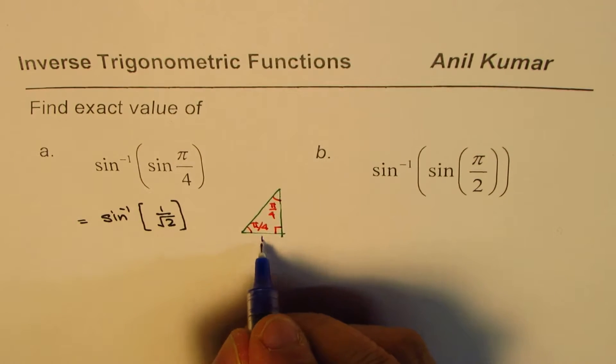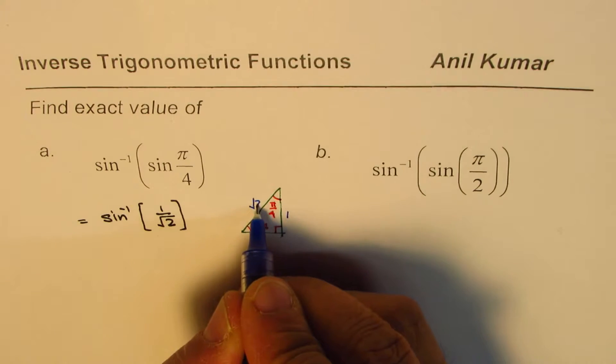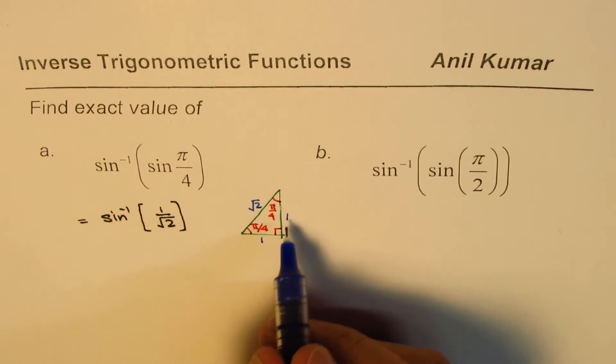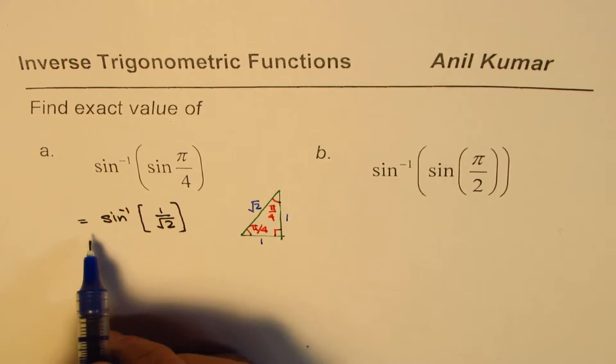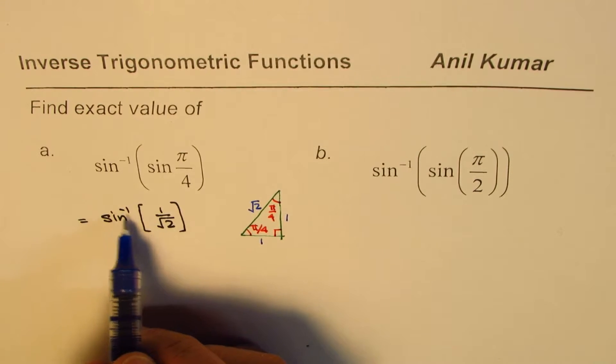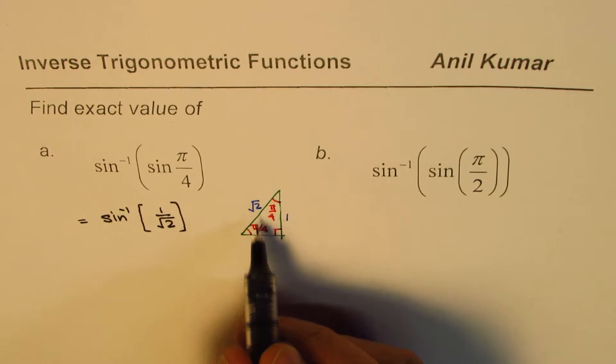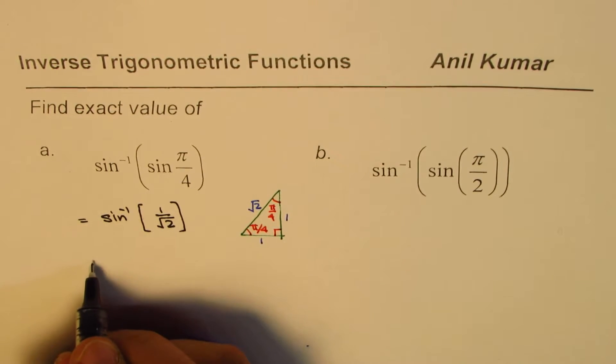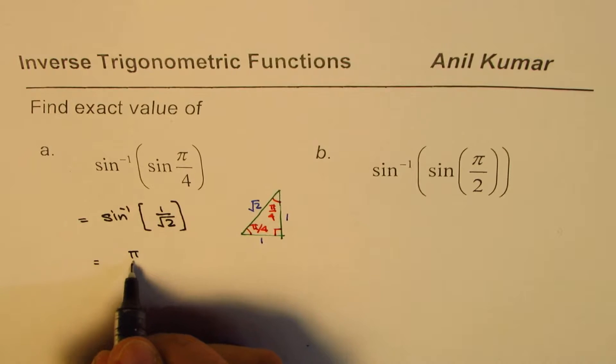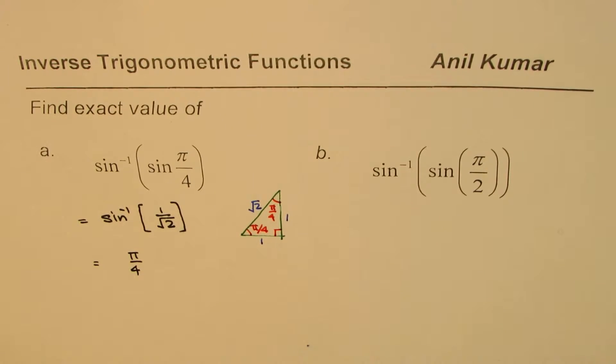So sine pi by 4 is 1 over square root 2. Now sine inverse 1 over square root 2 is what? The inverse of 1 over square root 2 will be pi by 4, so we get back pi by 4. Do you see that? What we learned here is that sine inverse of sine x is equal to x.